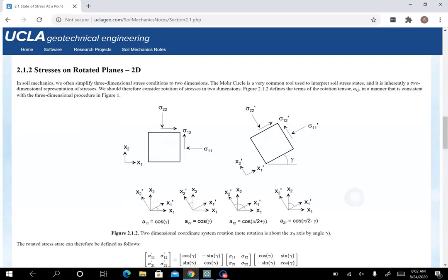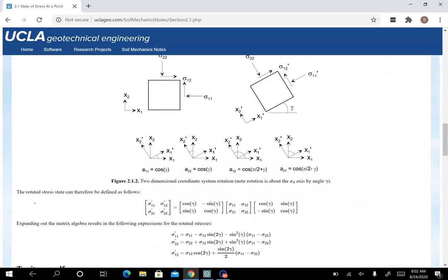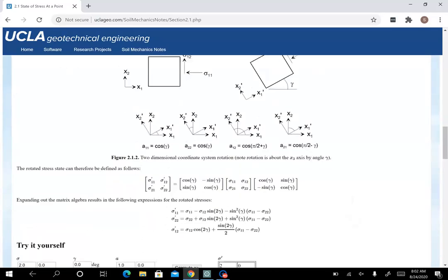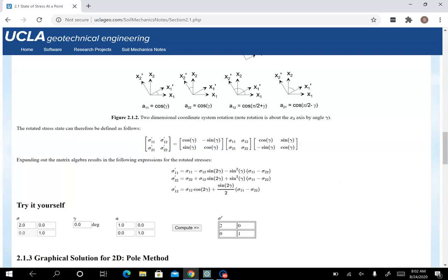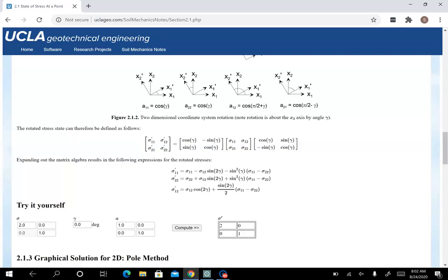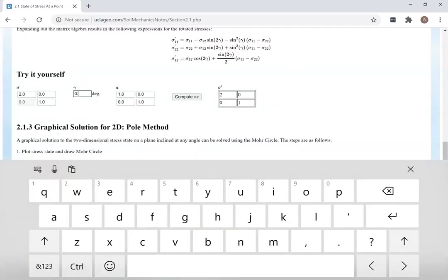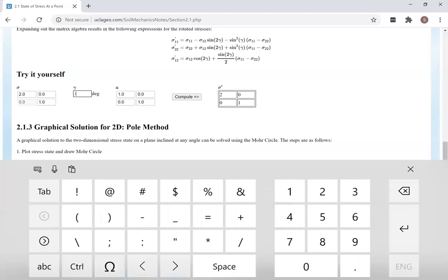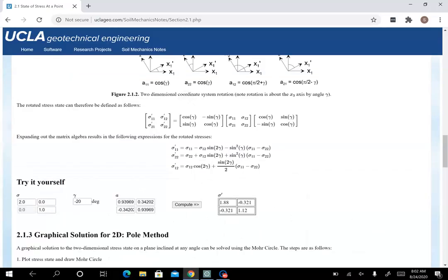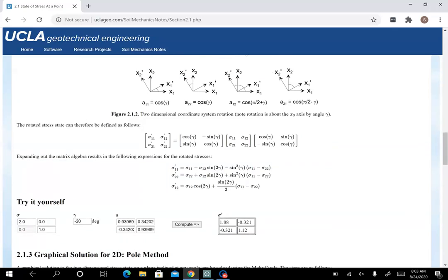Okay. And then we go through stresses on rotated planes in 2D and there's the coordinate transformation equation. And then these are the equations that we've derived before. So if you want to do this in two dimensions, you can just put in a gamma value here. Rotate it like, let's go negative 20 degrees. And then we calculate and you get the stresses on planes rotated negative 20 degrees. Or I guess that would be a clockwise rotation of the coordinate system down 20 degrees. And you've got the new stresses on that plane.